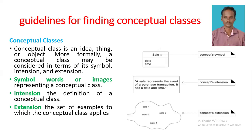An example is given with sales. The first diagram represents the symbol, which represents the sale class. Sale is a class name and it has two attributes: date and time. The second diagram represents the intention. We know that the intention is the definition of a conceptual class. The definition of sale is: a sale represents the event of a purchase transaction, and it has date and time attributes.